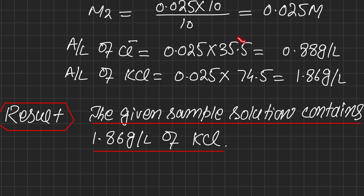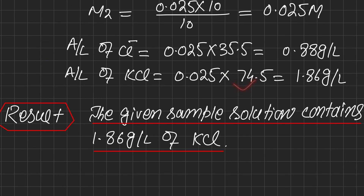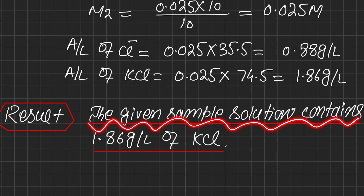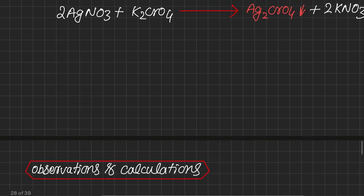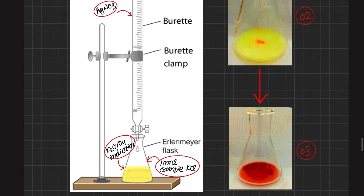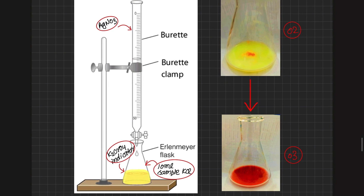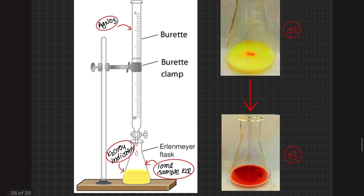To determine the amount per liter of chloride, we multiply the molarity (0.025) by 35.5 (the atomic mass of chloride), giving 0.88 grams per liter. To find the amount per liter of KCl, we multiply the molarity by the formula weight of KCl (74.5), giving 1.86 grams per liter. The result is that the given sample solution contains 1.86 grams per liter of KCl. This completes the estimation of chloride ions by Mohr's method using argentometry with silver nitrate as titrant.